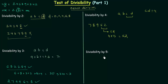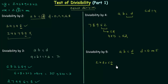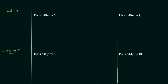Now we move to divisibility by 5. A number is divisible by 5 if its unit digit is either 0 or 5. So for a number ABCD, if D equals 0 or 5, the number is divisible by 5. For example, 248050 has 0 at the units place — divisible by 5. Another example, 748765 has 5 at the units place — also divisible by 5.